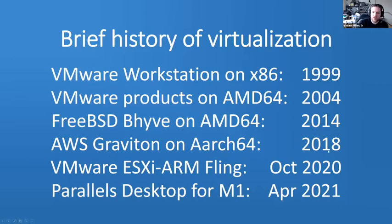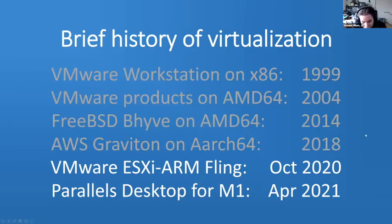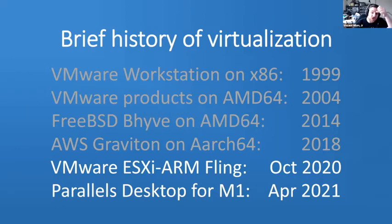Graviton has been a good cost-saving feature for those working with cloud-native deployments on Amazon. But today I'm primarily only going to be talking about the two most recent releases: VMware ESXi ARM Fling, released in October, and Parallels Desktop for the new Apple M1 chips, released just shy of two months ago — and then trying to get FreeBSD to run on both of those.